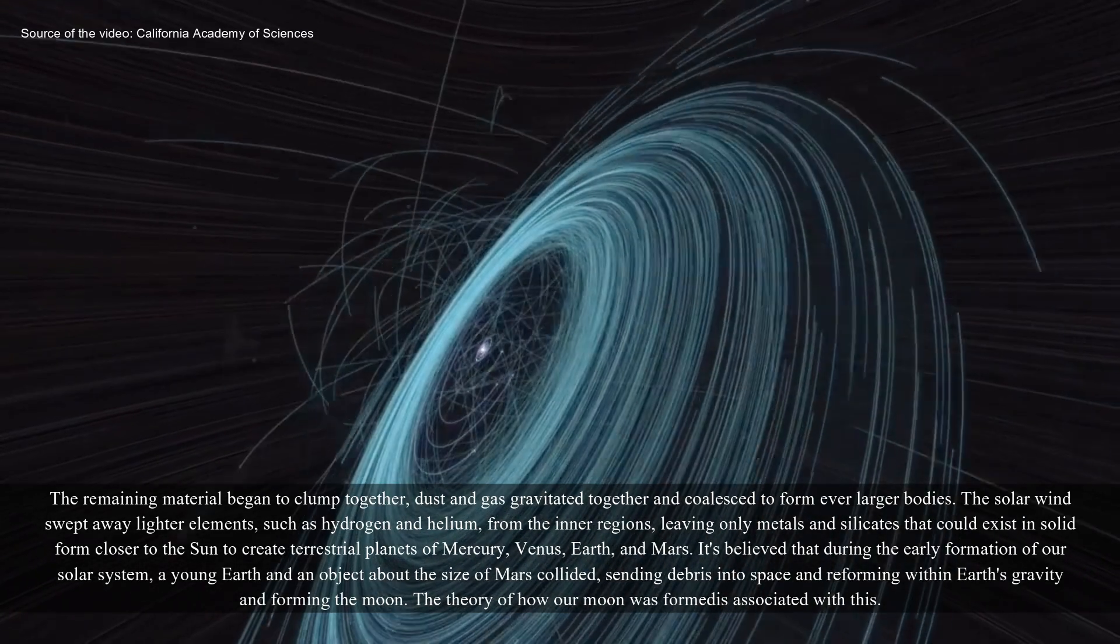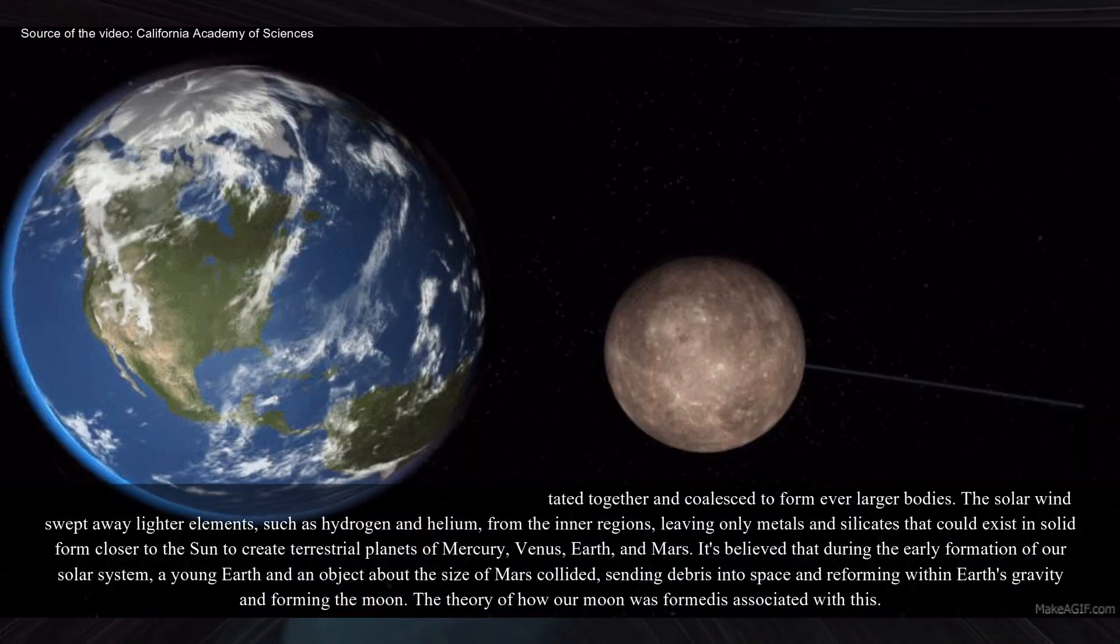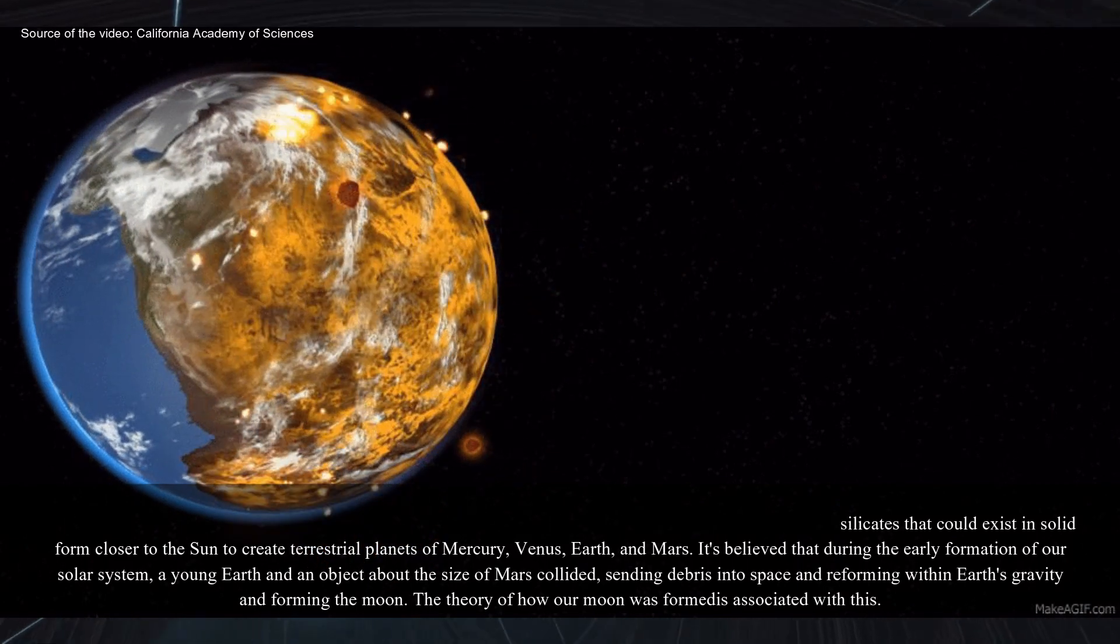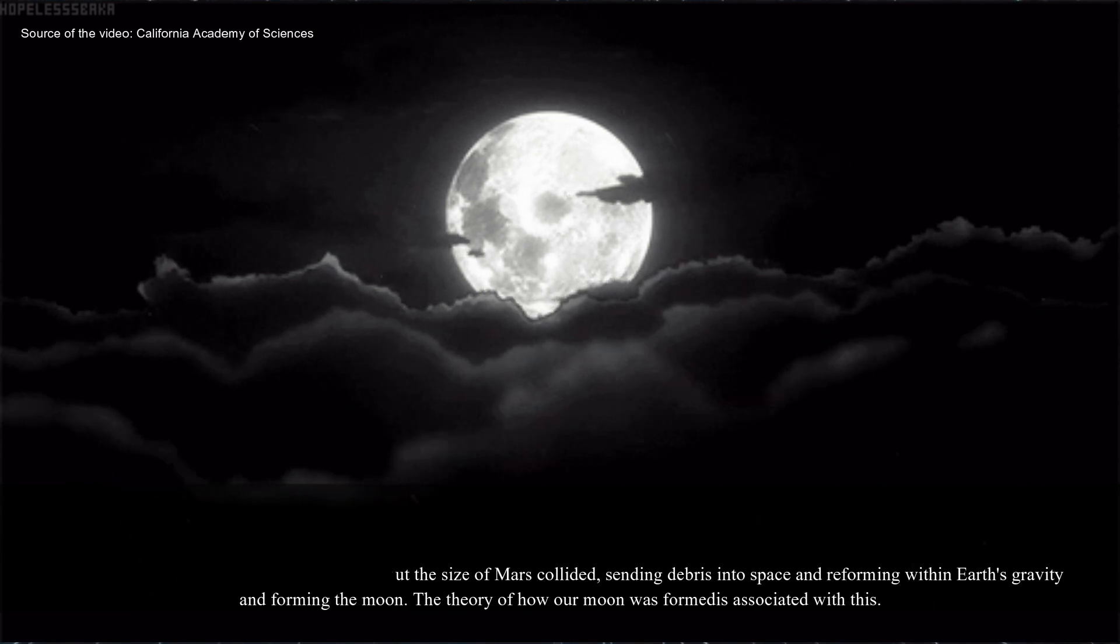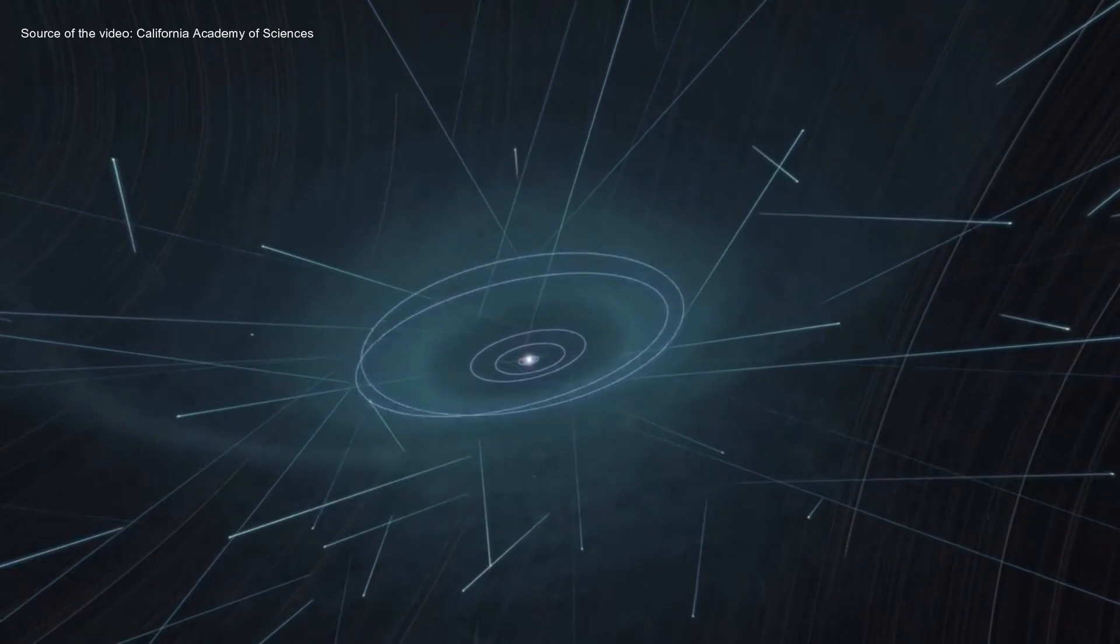It is believed that during the early formation of our solar system, a young Earth and an object about the size of Mars collided, sending debris into space and reforming within Earth's gravity energy and forming the moon. The theory of how our moon was formed is associated with this.